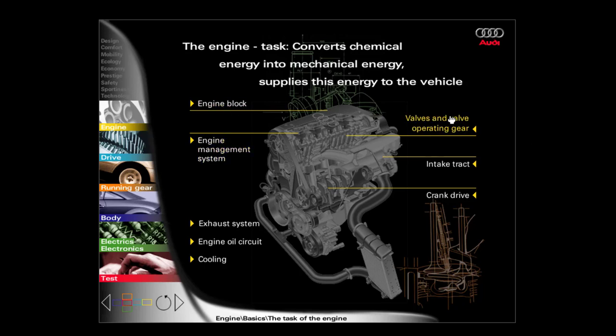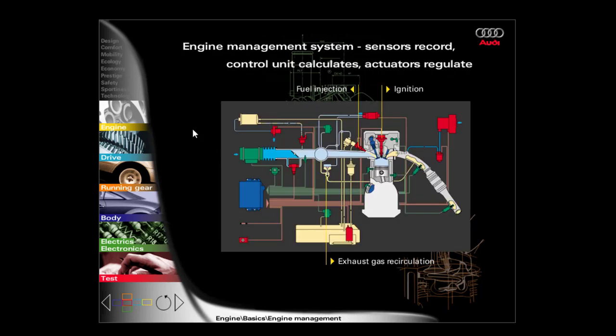In order to obtain further information on the individual engine components, please click onto these using the mouse. The engine management system monitors and regulates fuel injection, ignition and emission control. The engine management system is comprised of sensors, a control unit and actuators. The sensors acquire the input signals and pass these on to the control unit. The control unit compares these input signals with its stored nominal values. In the event of deviations, it calculates output signals which it passes on to the actuators. Modern diesel engines are also controlled by an engine management system.